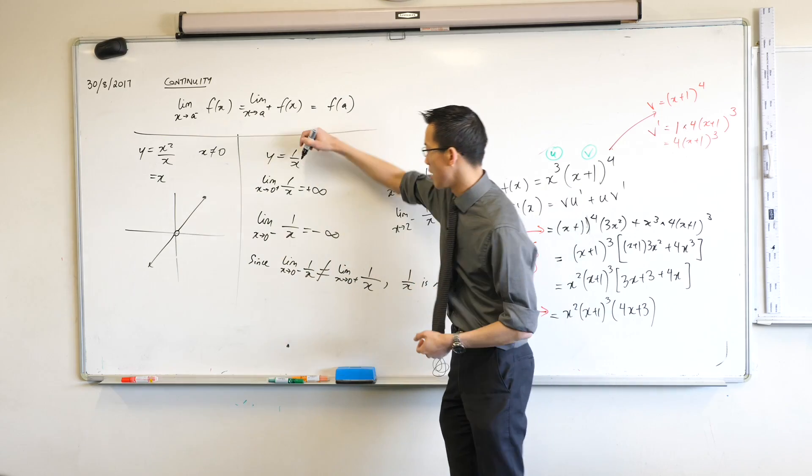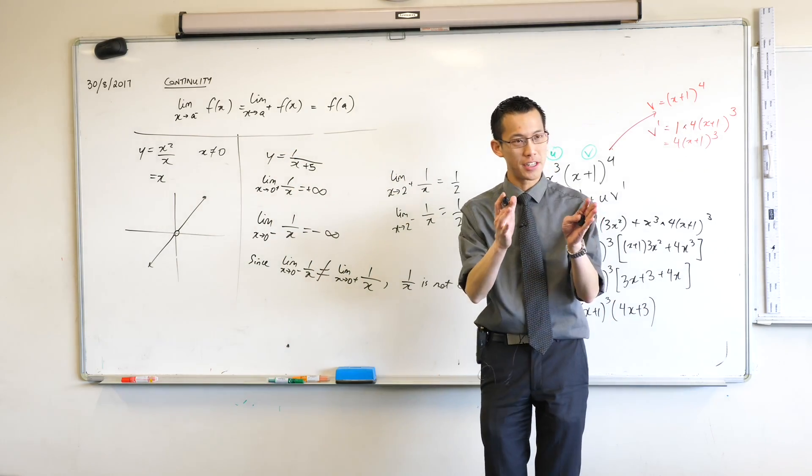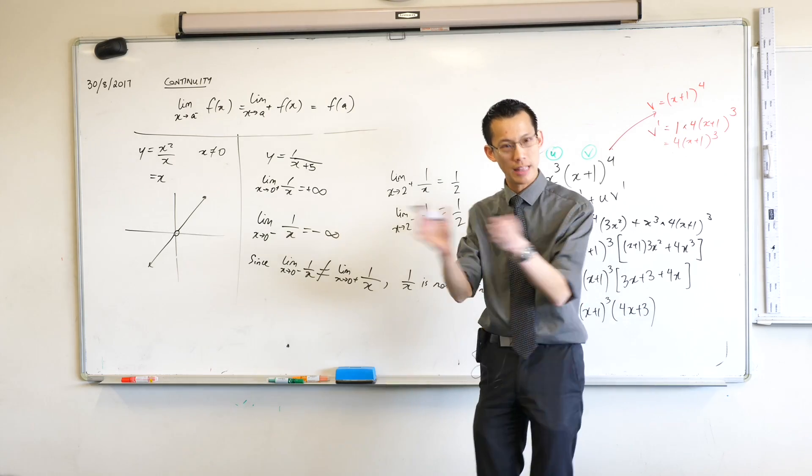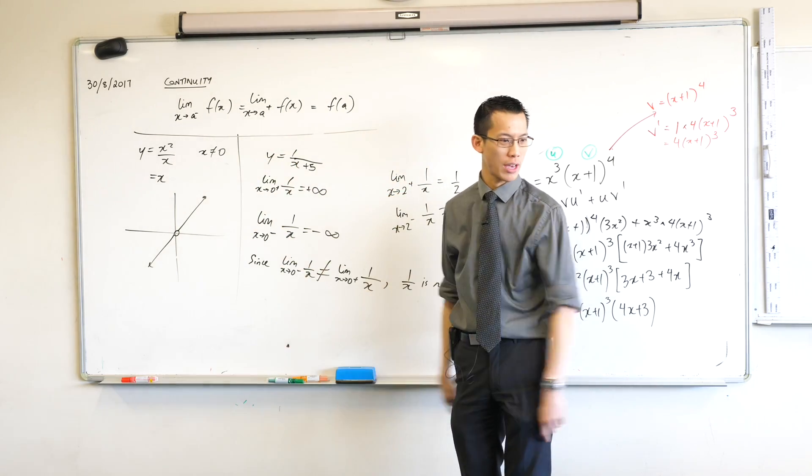But you know if I changed it to this, testing at zero is no point, right? Because I just shifted it five units to the left. So then you wouldn't test at zero, you'd test at negative five. Okay, does that make sense?